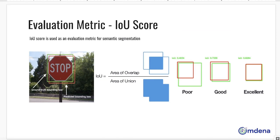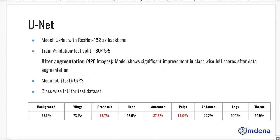The evaluation metric used for evaluating our algorithms is the IOU score. The first algorithm, U-Net, generates a mean IOU score of 57% on the test dataset, and we see that except for proboscis, antenna, and palps, all other classes are being predicted with a more or less good IOU score on the test dataset by the U-Net.